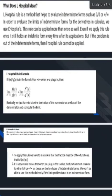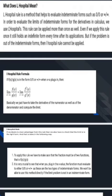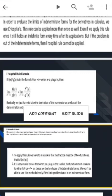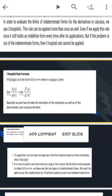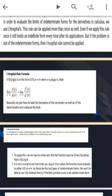Here we have seen that L'Hôpital's rule formula. What is L'Hôpital's rule formula? If f of x by g of x is in the form of 0 by 0 or infinity by infinity when x equals a, then the limit x tends to a of f(x) by g(x) equals limit x tends to a of f'(x) by g'(x). Basically, we just have to take the derivative of the numerator as well as of the denominator and compute the limit.